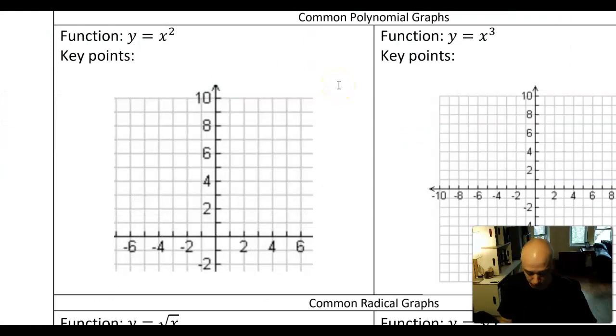The first key parent function is the parabola y equals x squared. Some key points that appear on this graph are (0,0), (1,1), (2,4) because 2 squared is 4, and also (-1,1) because (-1) squared is positive 1.